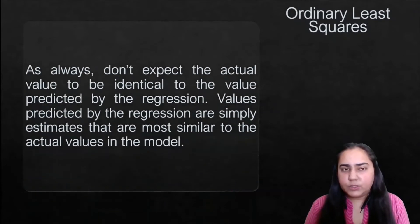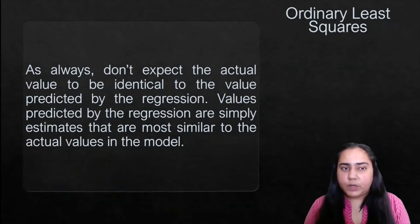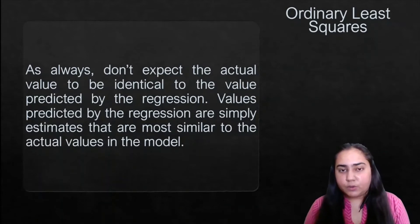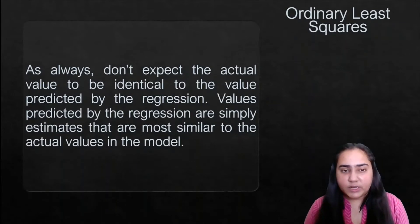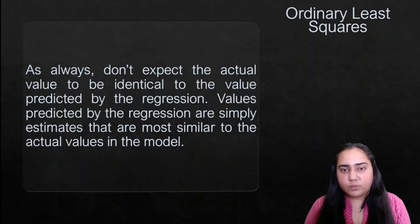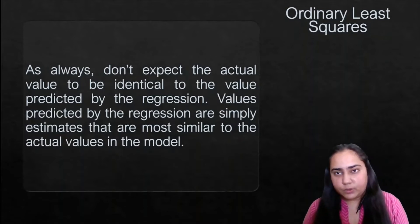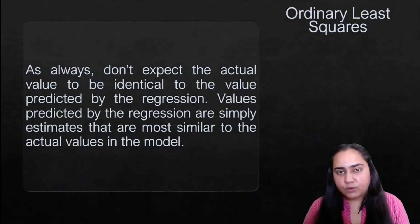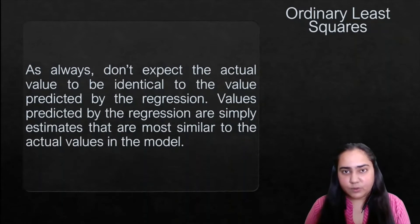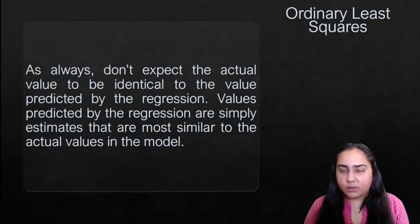You should always expect that the actual values are not going to be identical to the values predicted by the regression line. Values predicted by the regression line are simply estimates that are more similar to the actual values in the model. You cannot really expect your model to give you the exact value — it would however give you a close approximate value.